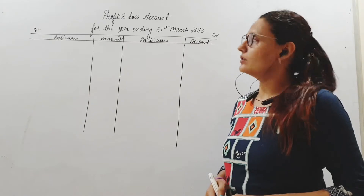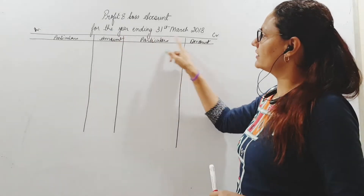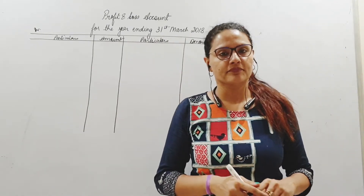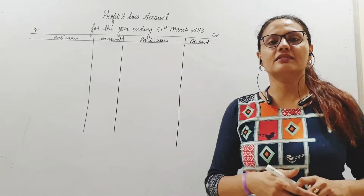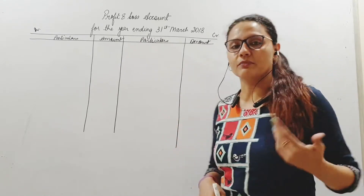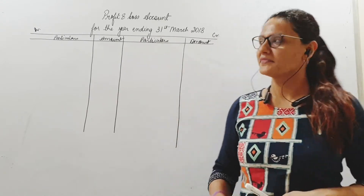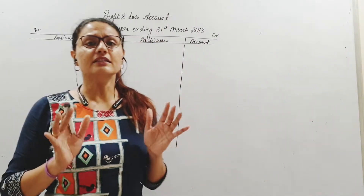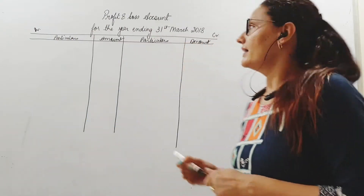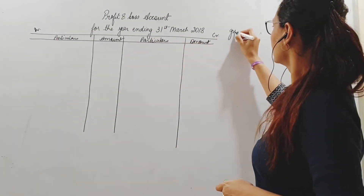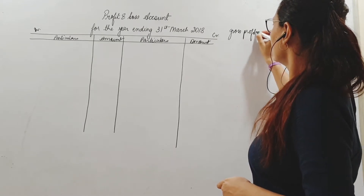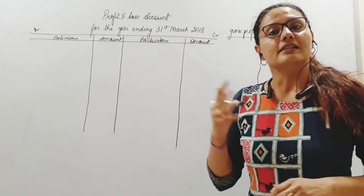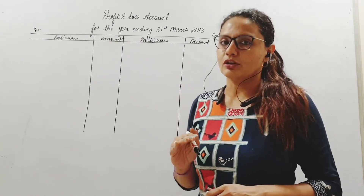The profit and loss account is also prepared for a particular year — for the year ended 31st March 2018, or whatever date is given. It can be any year depending on the sum. This is the next step in profit calculation. Till the trading account, we have arrived at the gross profit — gross profit meaning sales minus cost of goods sold.